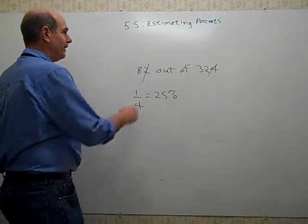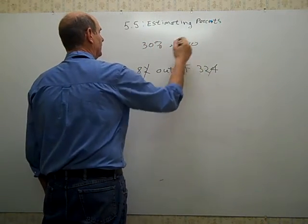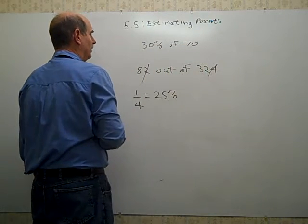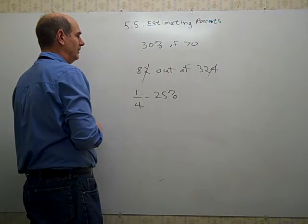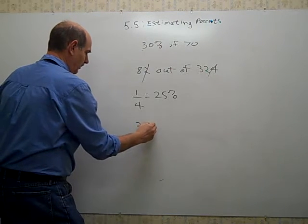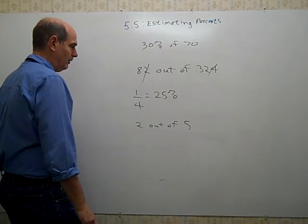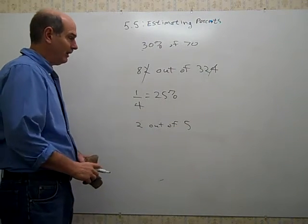So we learned how to do things like 30% of 70 by doing 3 times 7, or 3 tenths times 70. And we learned how to do things like 2 out of 5 by saying that's 2 fifths, 40%. That's the gist of the lesson.